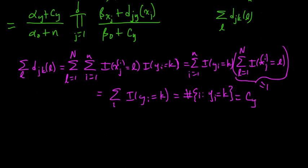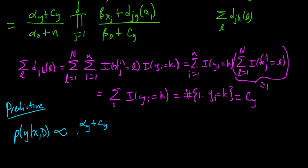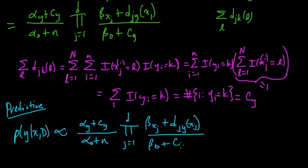well, at least proportional to this nice little expression. And let's write it all out. Let's write out what we got here, just to make it all a satisfying result. So the predictive distribution, posterior predictive distribution, is proportional to alpha y plus cy divided by alpha 0 plus n times the product over j from 1 to d. The betas, the beta xj plus dj y of xj divided by beta 0 plus cy. And that is our result.